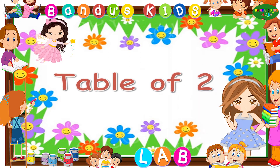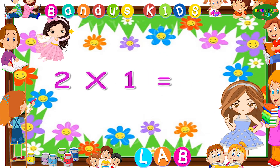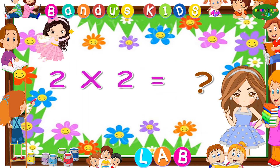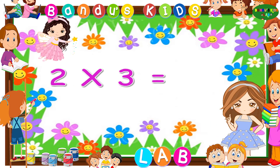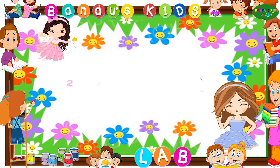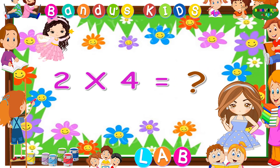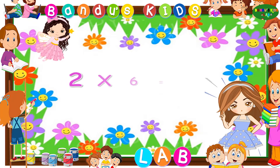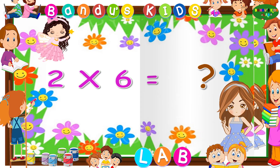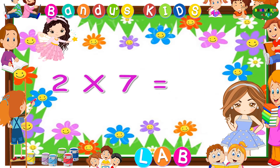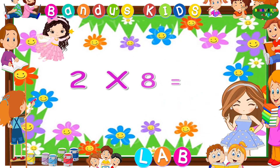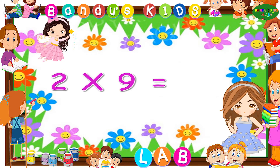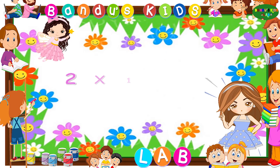Table of two. One two. Two ones are... Two twos are... Two threes are... Two fours are... Two fives are... Two sixes are... Two sevens are... Two eights are... Two nines are... Two tens are...